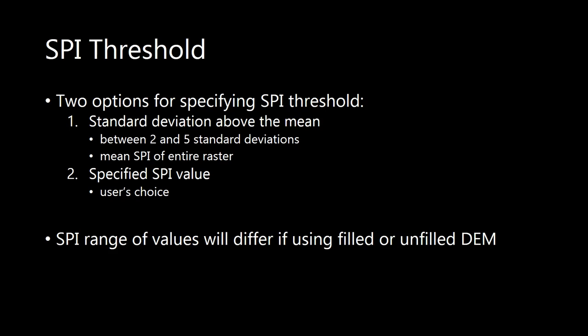The second option is to have the user specify an actual stream power index value. This will take some time — you'll want to look at the raster and see the distribution of values before you make a choice. Remember your stream power index range is going to vary depending on whether you used a filled or an unfilled DEM.